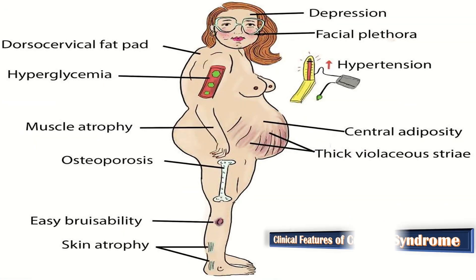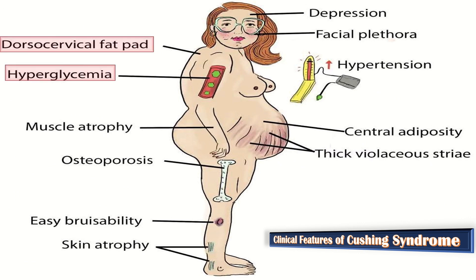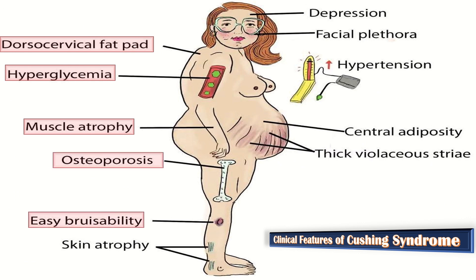The clinical features of Cushing syndrome include dorsal cervical fat pad, hyperglycemia, muscle atrophy, osteoporosis, easy bruisability, skin atrophy, depression, facial plethora, and hypertension.